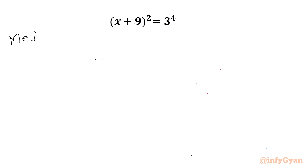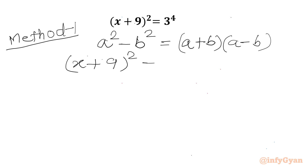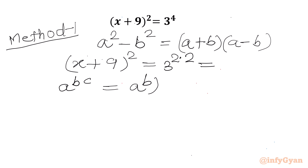Let me write here Method Number 1. In this method I will use the algebraic formula or identity a² - b², which is equal to (a + b)(a - b). So I can write our equation (x + 9)² = 3⁴. This 4 can be factorized as 2 times 2. Using the exponent law a^(b×c) = (a^b)^c, we can write 3⁴ as (3²)² which is 9².